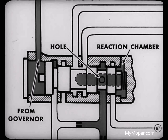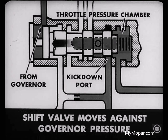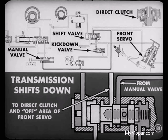There, the oil passes through a hole drilled lengthwise through the center of the shift valve to the reaction chamber at the throttle pressure end of the valve. When this additional pressure is dumped through the kickdown port to the throttle pressure chamber of the shift valve, it forces the shift valve to move against governor pressure. Moving the shift valve to the downshift position closes off line pressure to the direct clutch and to the offside of the front servo. So, the clutch is released, the front band is applied, and the transmission is back in the downshift position.